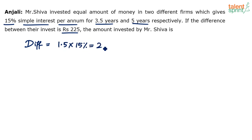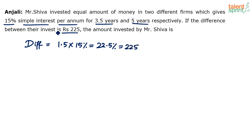15% for 1.5 years gives 22.5%. So the difference in interest is 22.5% of the principal. According to the question, this difference is rupees 225. So 22.5% of the principal equals 225.